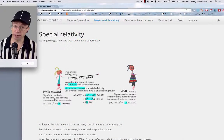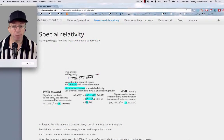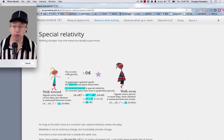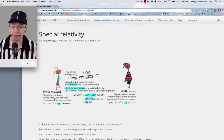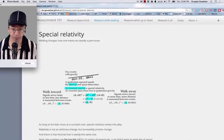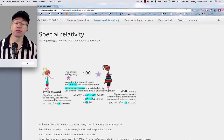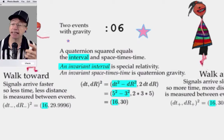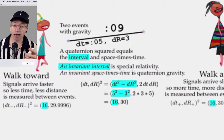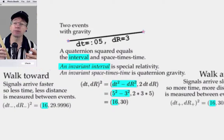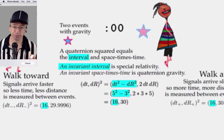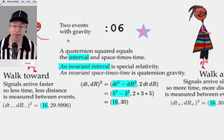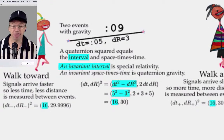Hello, I'm Doug. This is a Measurement 101 pagecast — three minutes talking about a web page on this site. In this case, measurements made while walking, or equivalently, the special relativity page. We have these two supernova, and I, as the reference observer, say that the time interval between the two, dt, is exactly 5, and the space dr measurement is exactly 3. Squaring those gives an interval of 16 and a space-times-time of 30 — that is our starting point.